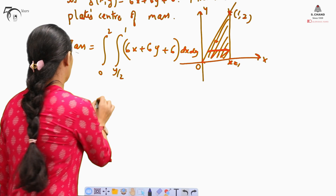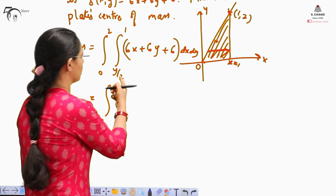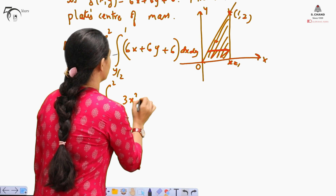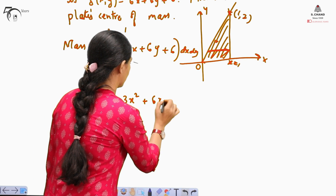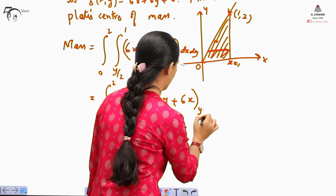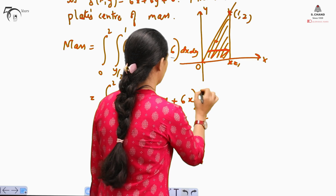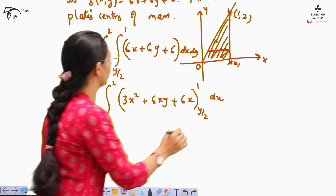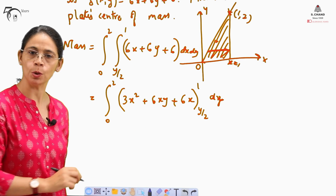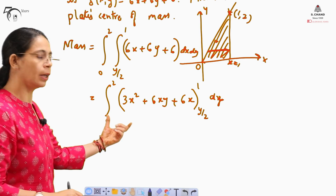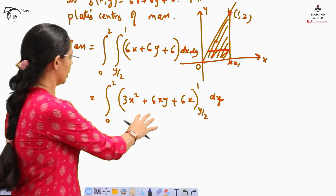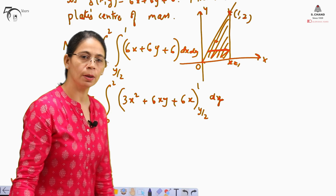We need to integrate with respect to x first. So it is from 0 to 2, giving us 3x² + 6xy + 6x evaluated from y/2 to 1, then dy — because we have already integrated with respect to x, it has been converted into a single integration. Integrating this will give us the mass.